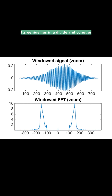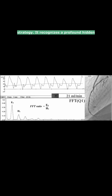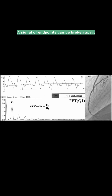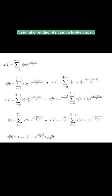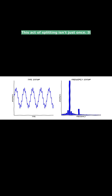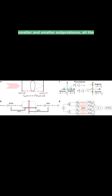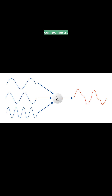Its genius lies in a divide-and-conquer strategy. It recognizes a profound hidden symmetry: a signal of N points can be broken apart into the sum of its even-numbered and odd-numbered points. This act of splitting isn't just once — it recursively breaks the problem down into smaller and smaller sub-problems, all the way down to the simplest possible components.